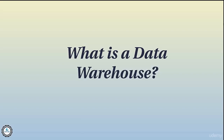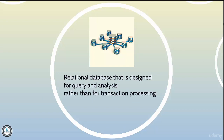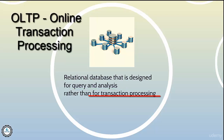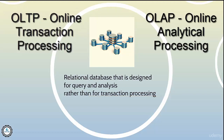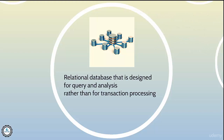A data warehouse is nothing but a relational database — like SQL Server, Oracle, Teradata, or any similar database — that is specifically designed for query and analysis rather than transaction processing. That is where we see the difference between OLTP and OLAP, which is online transaction processing and online analytical processing. There are separate chapters covering the features, benefits, advantages, and disadvantages of both.